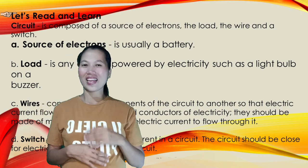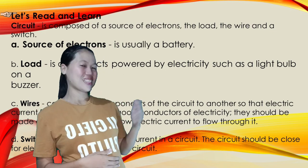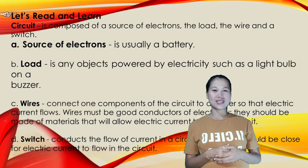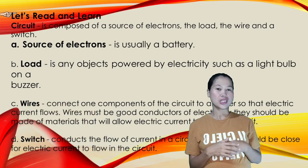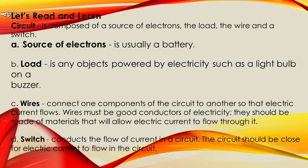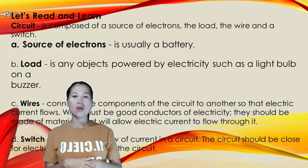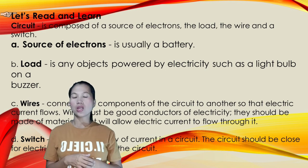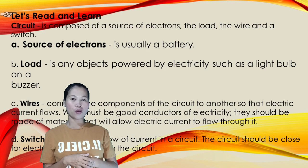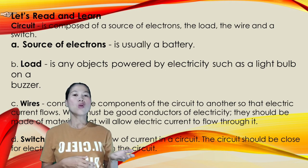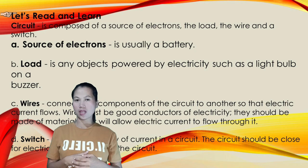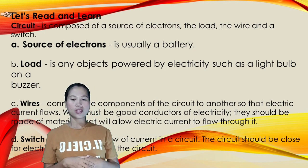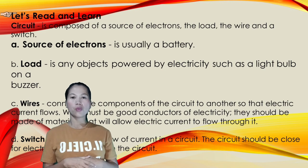Source of electrons is usually a battery. Load is any object powered by electricity such as a light bulb or buzzer. Wires connect one component of the circuit to another so that electric current flows. Wires must be good conductors of electricity. They should be made of materials that will allow electric current to flow through it.